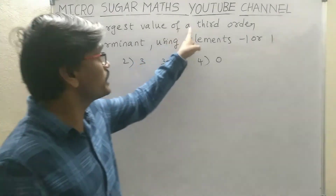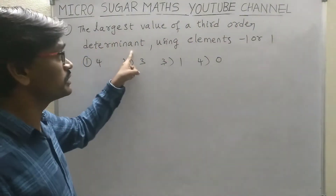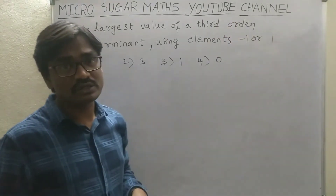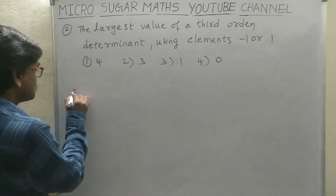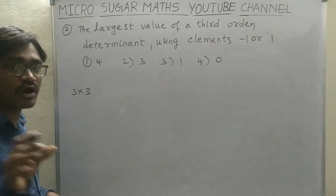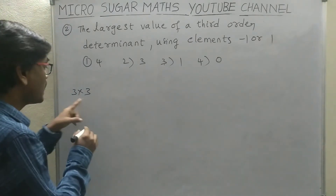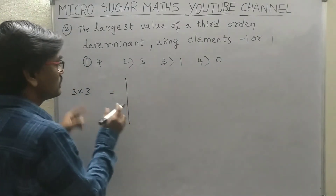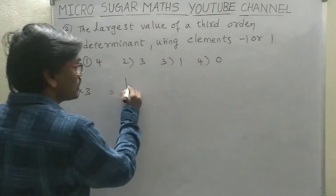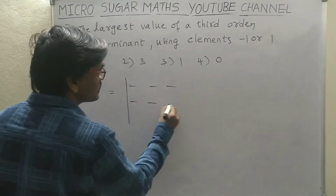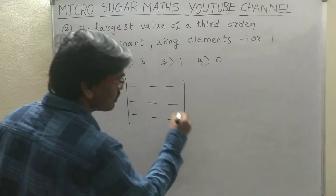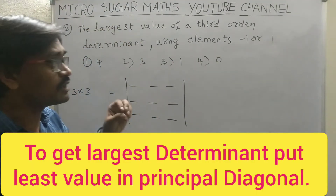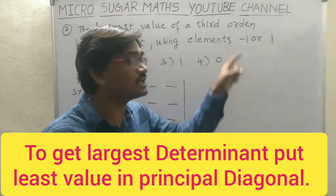The next sum: the largest value of a third-order determinant using elements minus 1 or 1 only. Third-order determinant means how many elements it contains — 9 elements. Therefore in the determinant, 9 elements means 9 places you have. Now, to get the largest determinant, fill up the least number. What is the least number? Minus 1 in the principal diagonal.